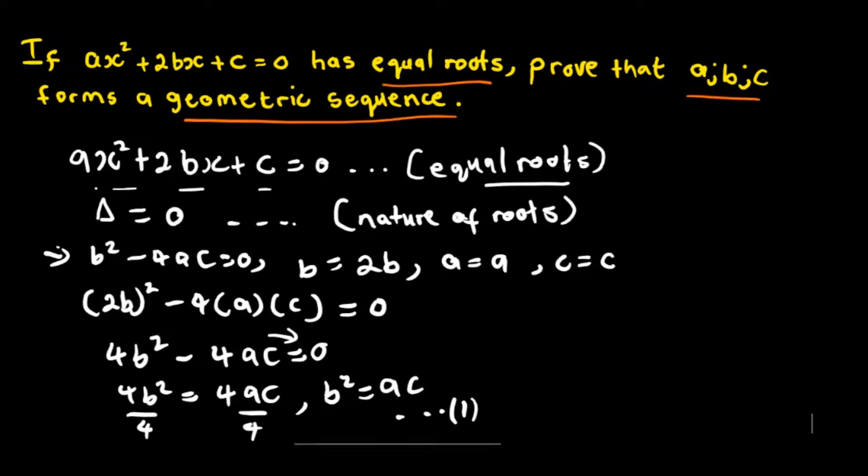Now we must prove that a, b, c forms a geometric sequence. To identify a geometric sequence, we know the ratio r must be constant throughout.